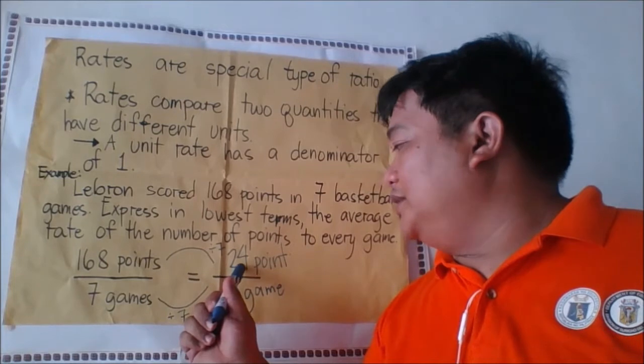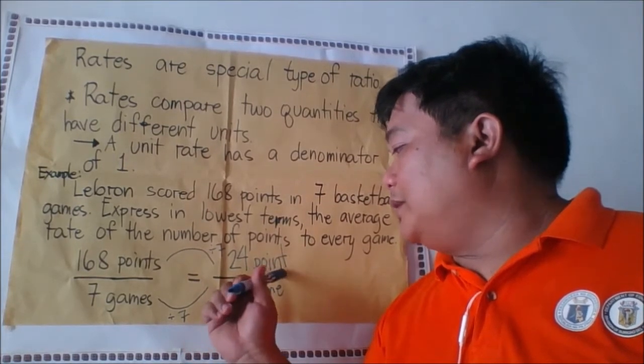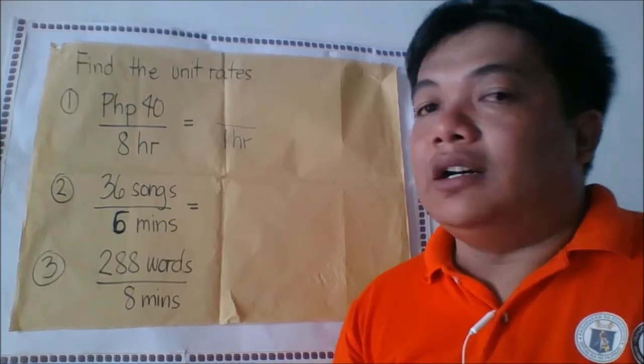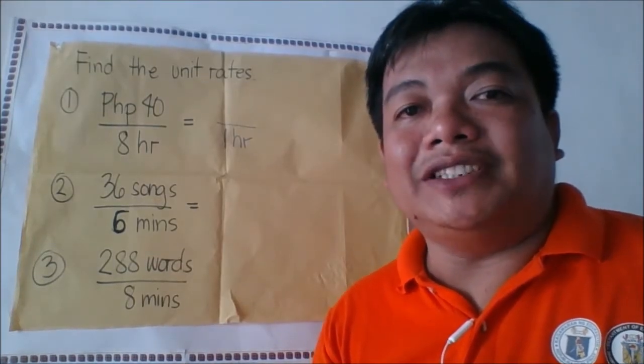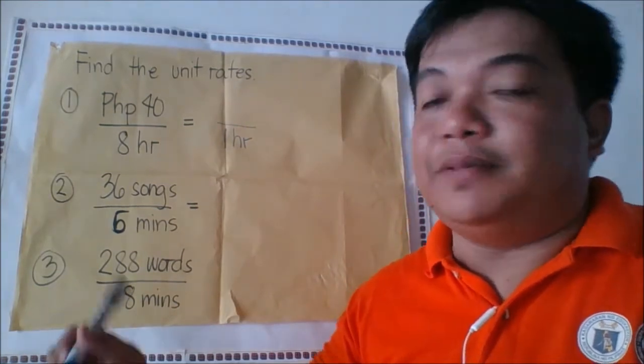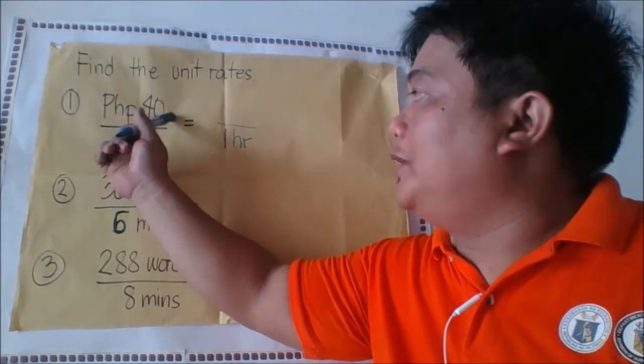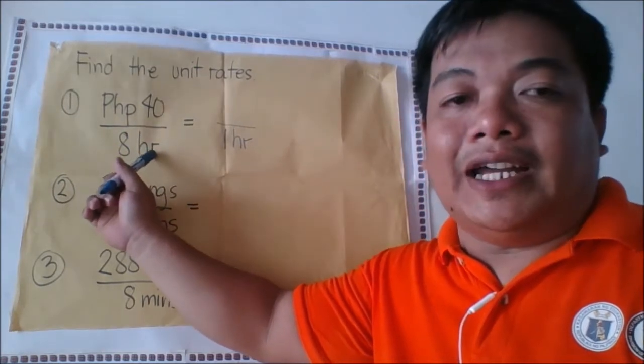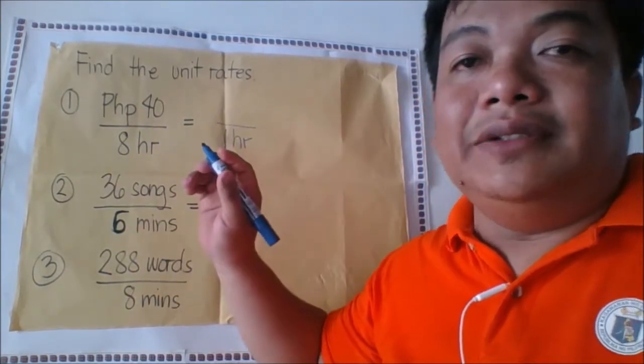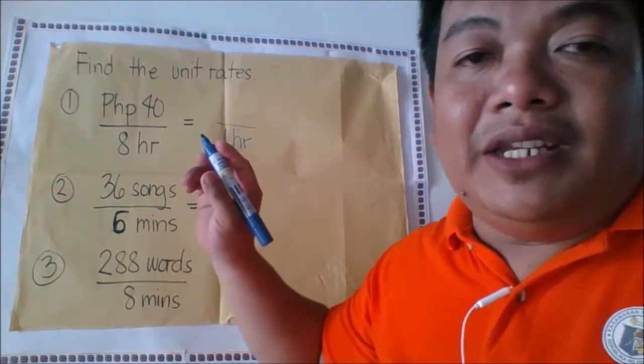Example number 1: 40 Philippine pesos to 8 hours. Since unit rate has a denominator of one, we will equate 8 hours to 1 hour. How did you get one hour? Simply divide by 8.